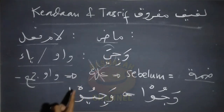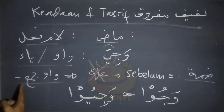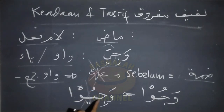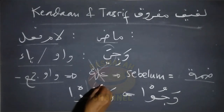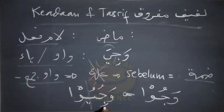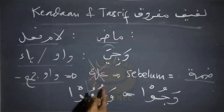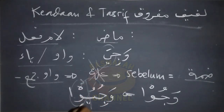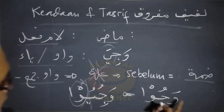Jadi wajia bersambung dengan waw jamak menjadi wajiu. Prosesnya adalah yaknya di sini dibuang dan huruf sebelum ya yaitu huruf jim di sini diberi harkat dammah, jadi yang asalnya kasrah diganti dengan harkat dammah. Hal ini dilakukan dalam rangka untuk menyesuaikan harkat dengan waw jamak yang bersambung dengannya, sehingga menjadi waju.